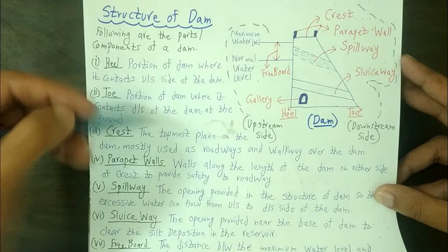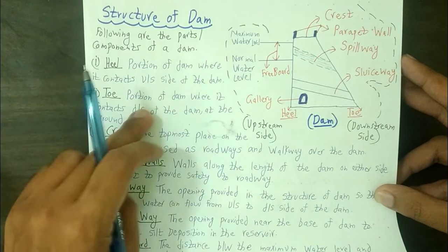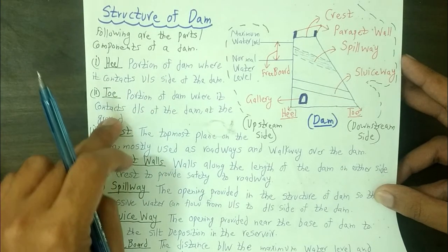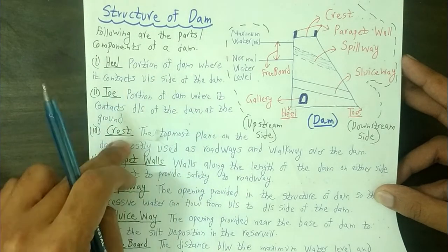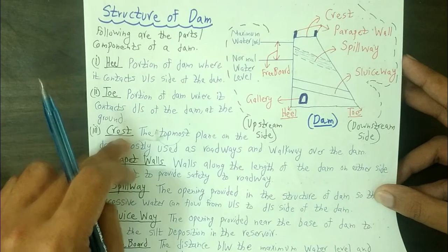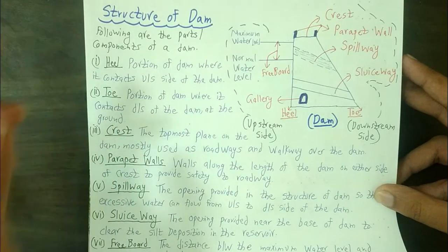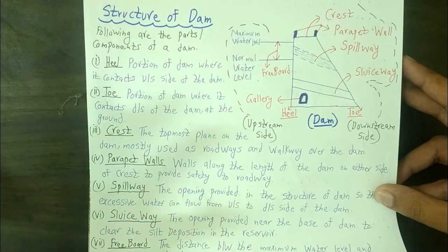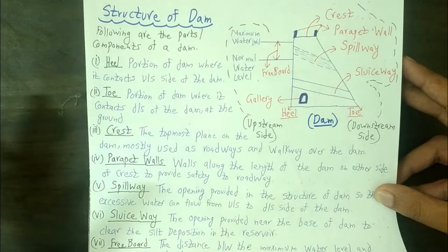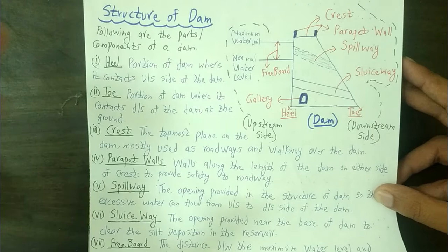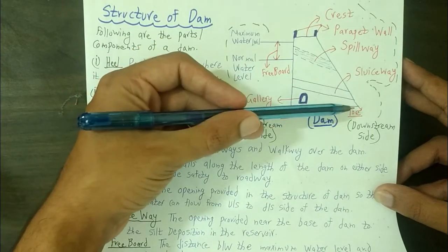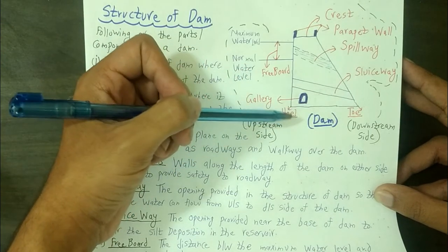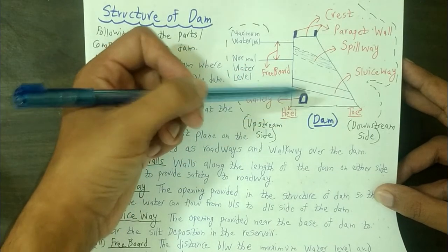Oppositely, the portion of the dam where it contacts the downstream side and the ground is called the toe. The toe is the point of interaction between the base of the downstream side of the dam and the ground. So this is our toe and this is our heel of the dam — two easy concepts.